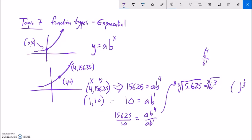And let me do that on my calculator. 15.625 to the power of one-third, 2.5. So b is equal to 2.5.